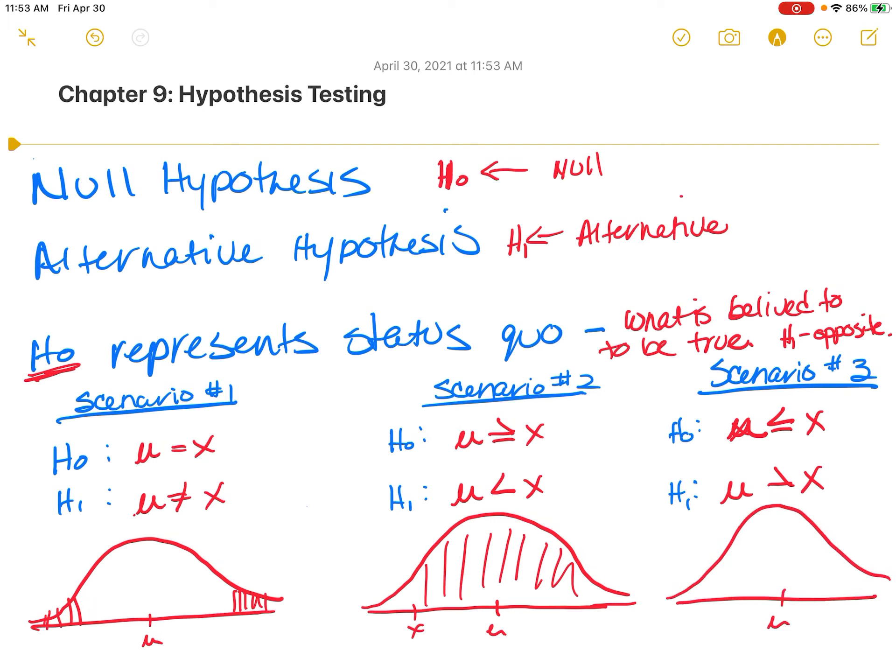This is the mean, and this is X. We'll look at the mean being... That's on the left, that's on the right. So one-tail test upper, lower, and then this is a two-tail test.